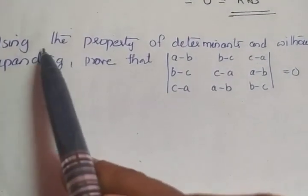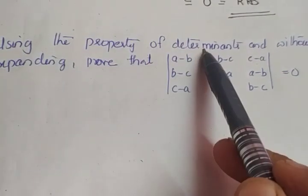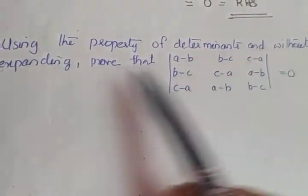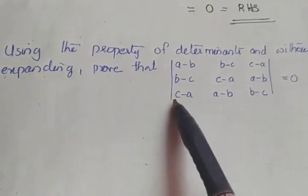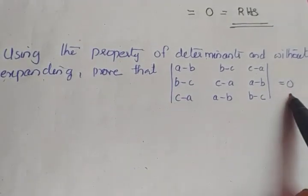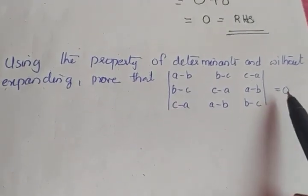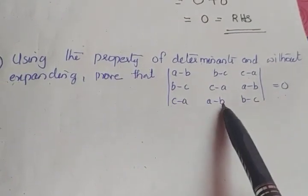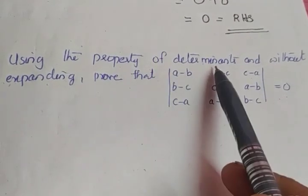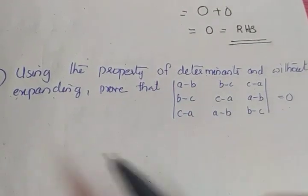The second question: using the property of determinants and without expanding, prove that this determinant value is equal to 0. We are not allowed to expand and have to apply properties of determinants.